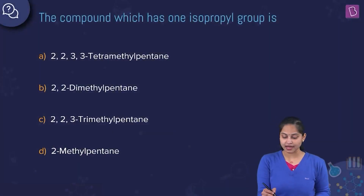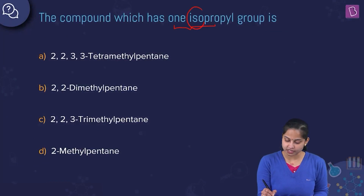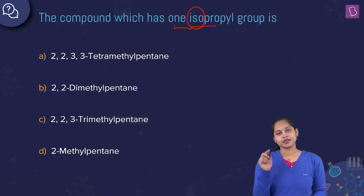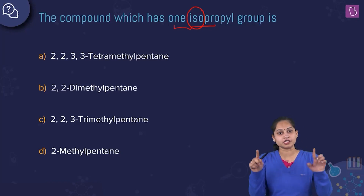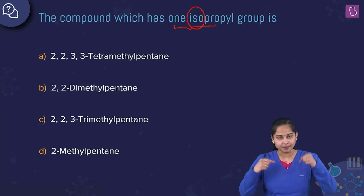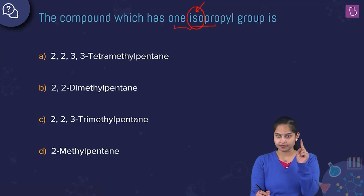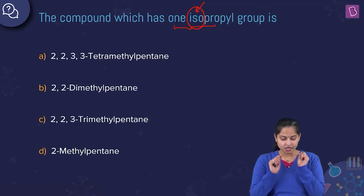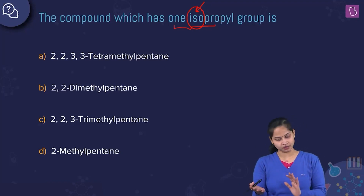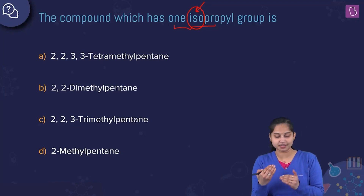The question is: which compound has one isopropyl group? We use the prefix 'iso' when one methyl group is attached to the second last carbon atom of the straight chain. Let us draw the structure for 2,2,3,3-tetramethylpentane. Pentane means 5 carbon atoms: carbons 1 through 5.